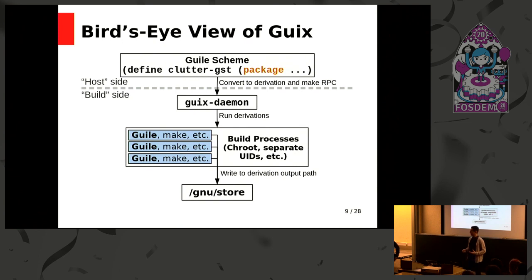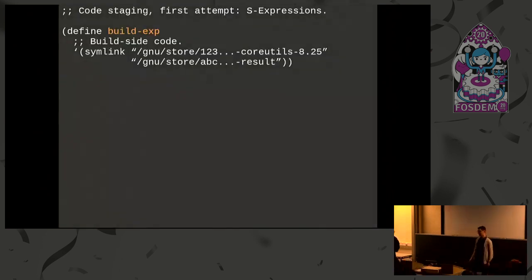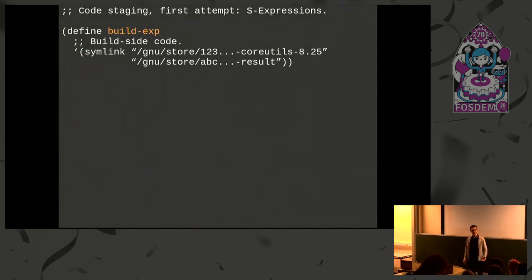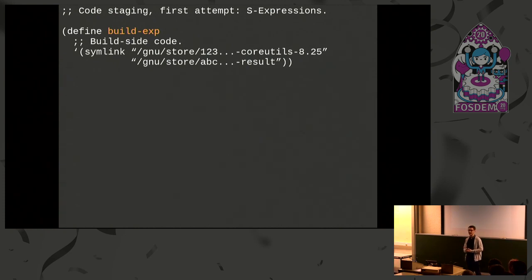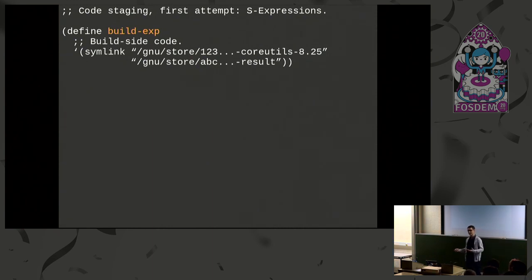So now I want to talk about how you get the code from the host side to the build side — how you generate that script that drives the process of building, for example, clutter-GST. One way that you could do it is to use S-expressions. So a lot of you are familiar with S-expressions.